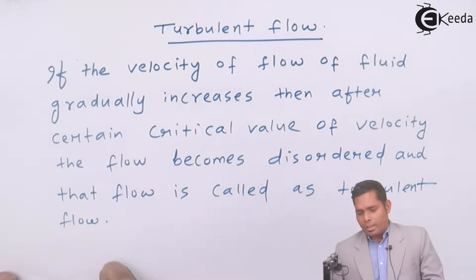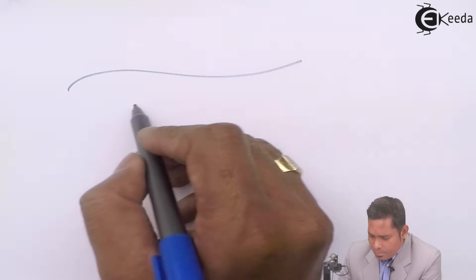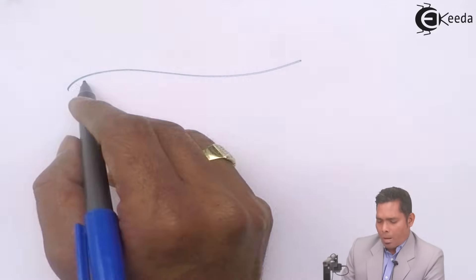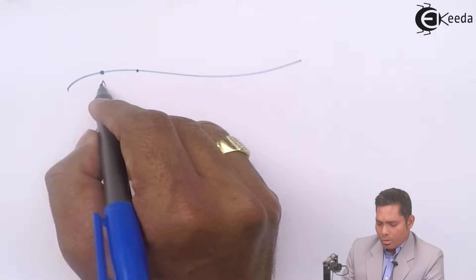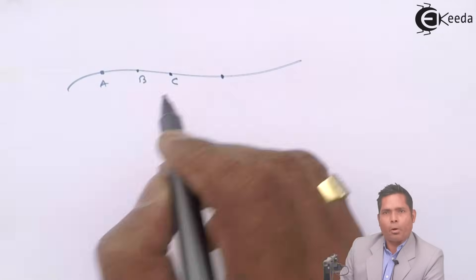That flow is called turbulent flow. Now in turbulent flow, suppose this is the path the liquid has to follow. A, B, C are the particles, suppose it has to pass to this point.